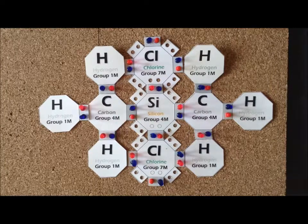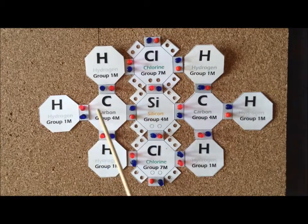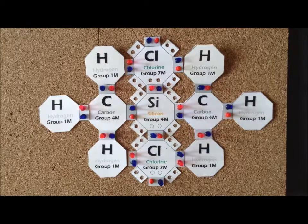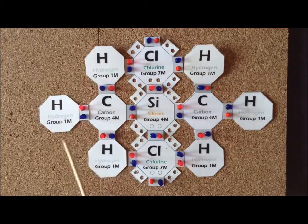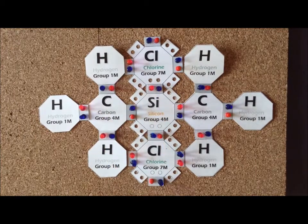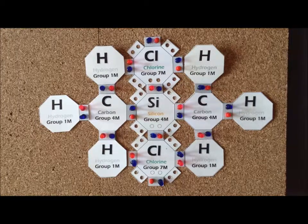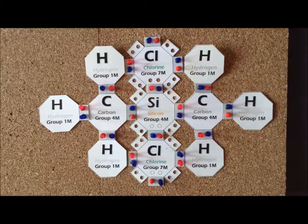In the compound dimethyldichlorosilane, the silicon atom — which is the central atom — contributes four valence electrons. The two carbons each contribute four valence electrons. Each of the chlorine atoms contributes seven valence electrons, and each hydrogen contributes one valence electron. We end up with a 32-electron system. We're able to satisfy the duet rule for each hydrogen in the two methyl groups, and the octet rule for carbon, silicon, and chlorine. Silicon and chlorine have the potential to expand the octet since they're in the third row, but in this compound we allocate all electrons and satisfy the rules without any octet expansion.